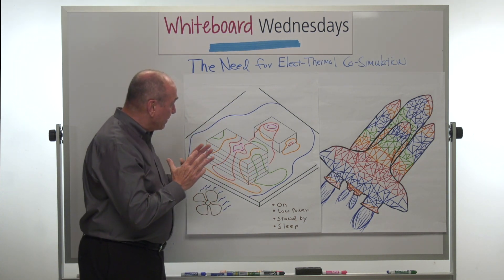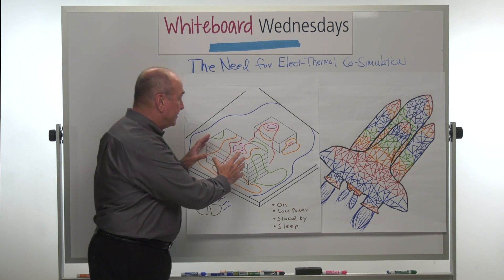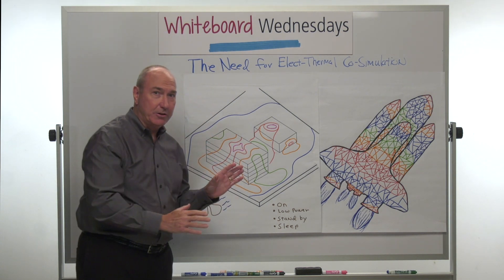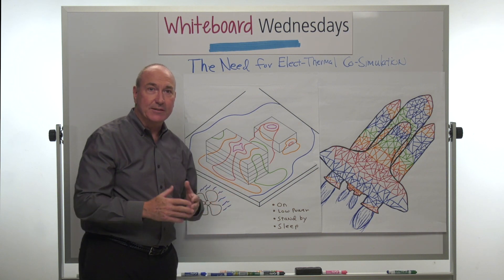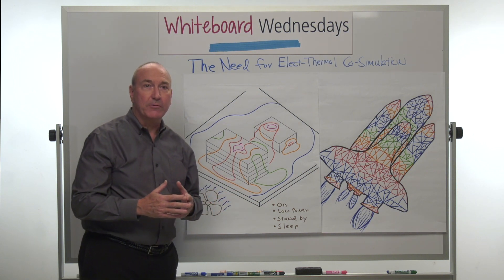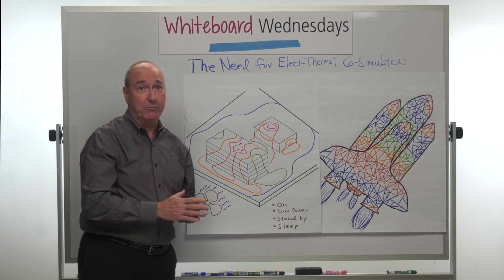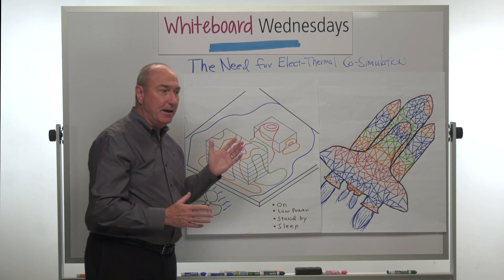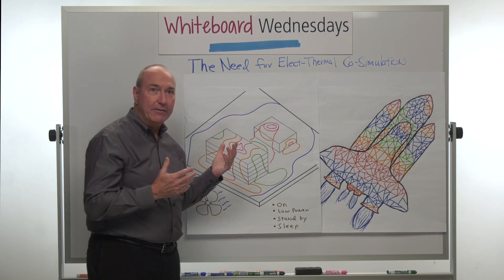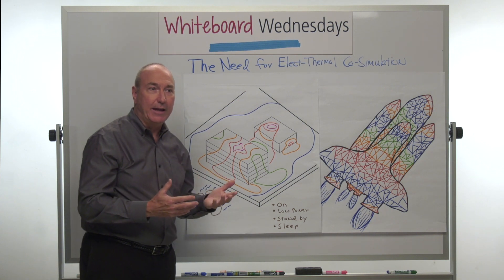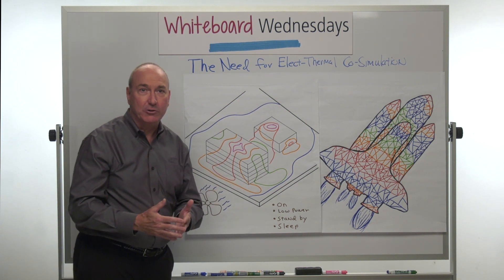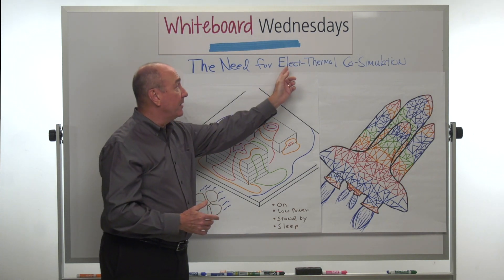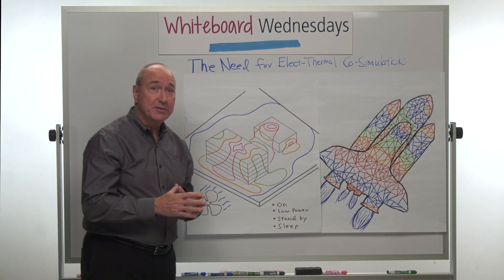What we find is that it's important to understand what temperature each of these different chips is operating at in order for their electrical performance to be right. So we have to do an analysis of the heat flow out of the chips, what temperature does that create, and then how does that impact the electrical performance of the chip. That's where we're getting into electrical thermal co-simulation.